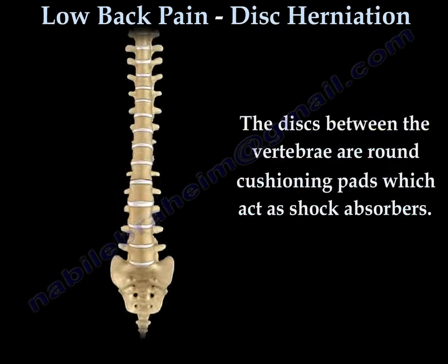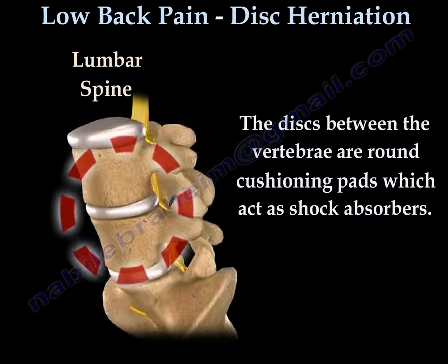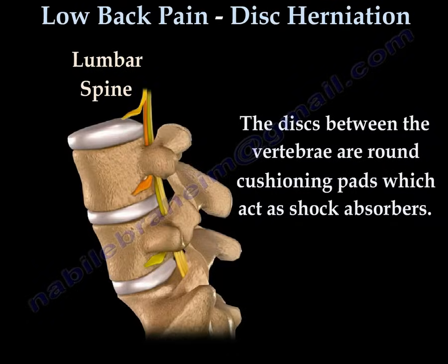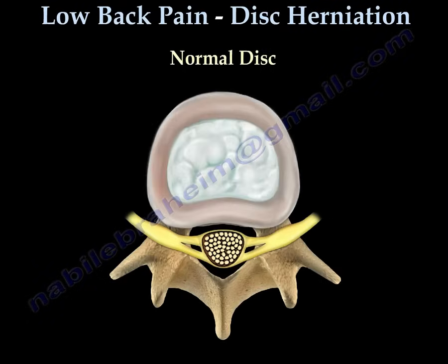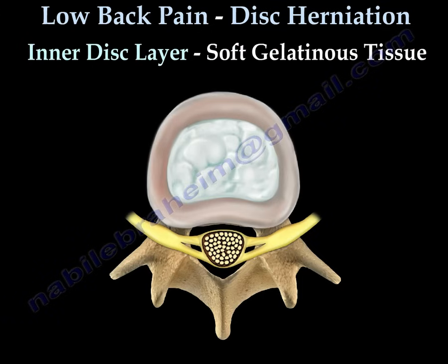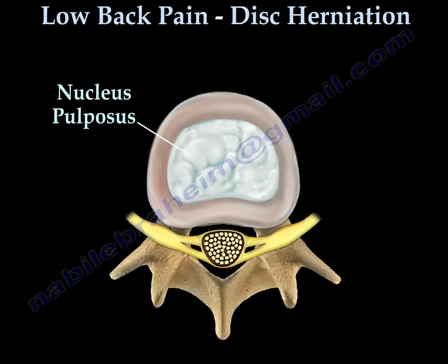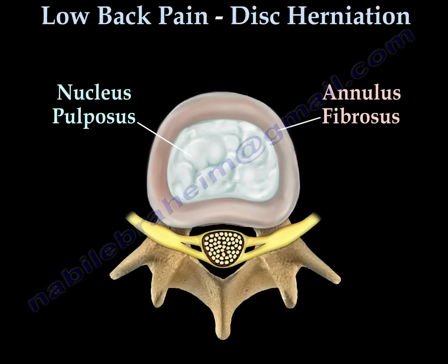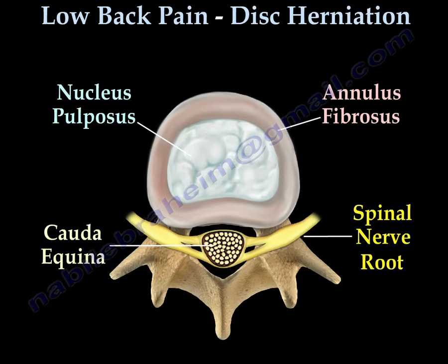The discs between the vertebrae are cushioning pads which absorb shock. In a normal disc, there are two layers: the soft gelatinous inner layer, called the nucleus pulposus, and an outer thick, strong layer, called the annulus fibrosus. Behind the disc lies the spinal nerve root and the cauda equina.